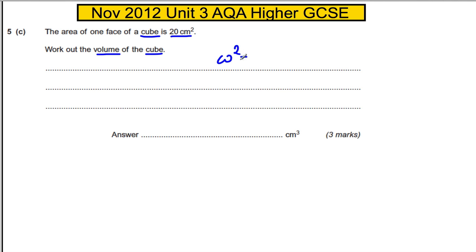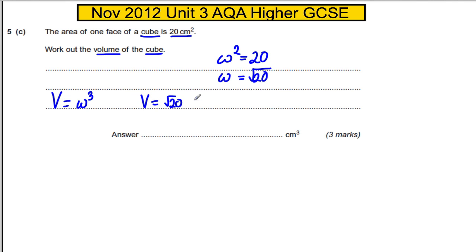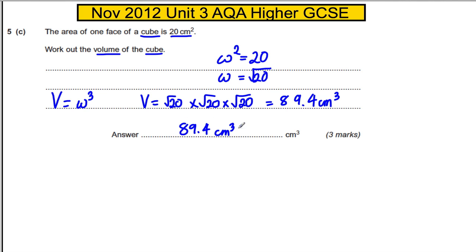You know the area of a face is 20, so W squared must be equal to 20, therefore W must be the square root of 20. You only take the positive square root because it's a length and must be positive. Now you know the volume must be W cubed, so the volume is the square root of 20 times the square root of 20 times the square root of 20. Tap that into your calculator and you get 89.4 centimeters cubed to 1 decimal place.